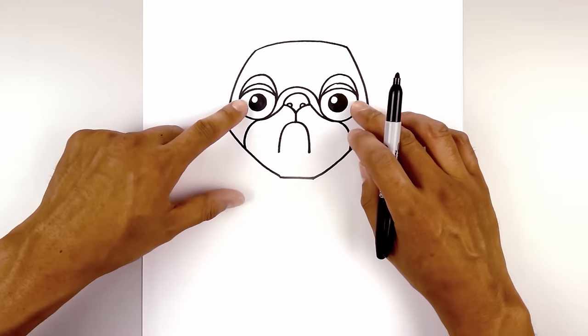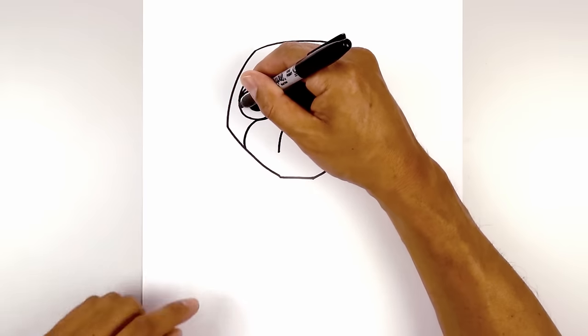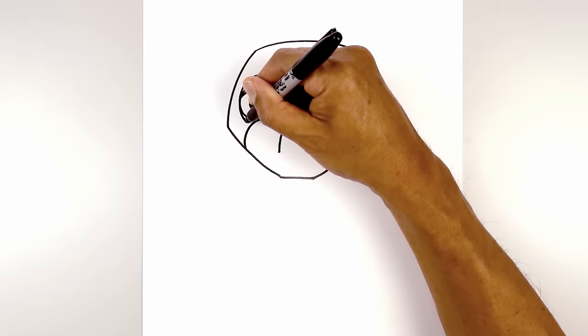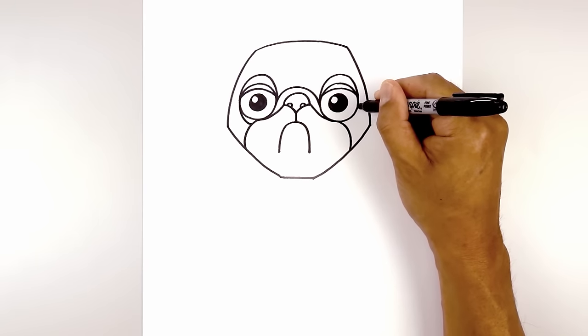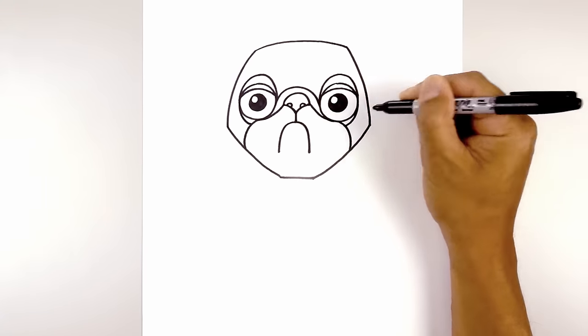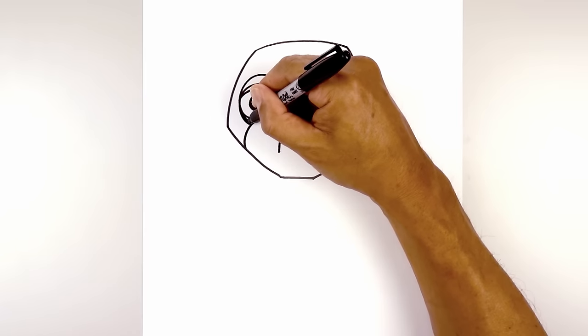Now we're going to tuck the lower eyelid underneath the muzzle. Starting from the side of the eye, we're going to curve down and taper it in. Do the same thing on the right side, and we're going to fill those in black.